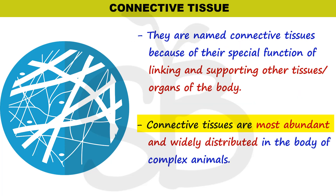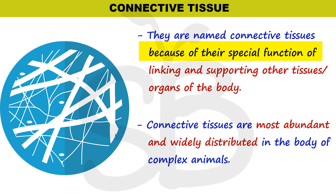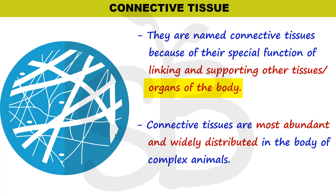Connective tissues are the most abundant and widely distributed tissues in the body of complex animals. They are named because of their special function of linking and supporting other tissues and organs of the body. We have different tissues and different organs in the body.